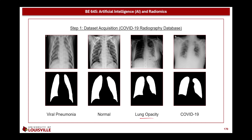COVID-19 is a viral infection caused by the SARS-CoV-2 virus, and it can cause symptoms ranging from mild — such as fever, cough, and fatigue — to severe, such as difficulty breathing and chest pain. On a chest X-ray or CT scan, it often shows as bilateral peripheral ground glass opacities, which are areas of increased density in the lungs. Leaving COVID-19 untreated can lead to severe respiratory issues, especially in older adults or those with underlying health conditions.